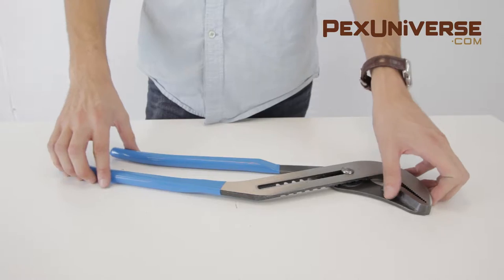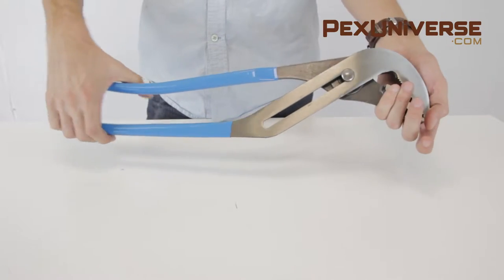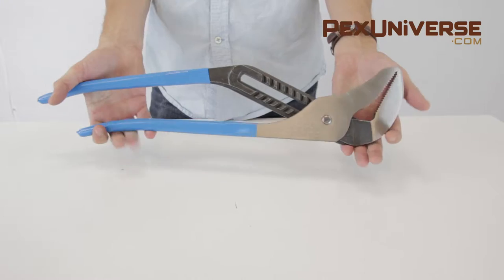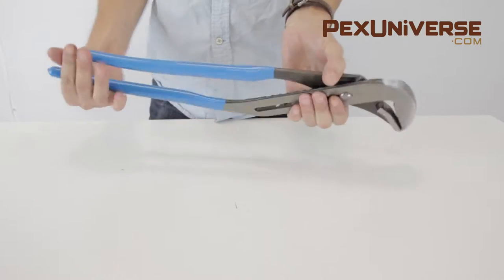Today we'll talk about the 480 Channel Lock Big Az 20 and a quarter inch straight jaw tongue and groove plier with five and a half inch jaw capacity.